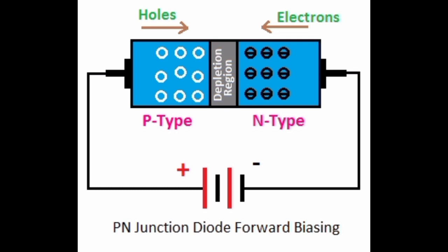In P-N junction diode there are two biasing techniques. This is forward bias. In forward bias the positive terminal of battery is connected to the positive of the diode, and the negative terminal of the battery is connected to the negative of the diode.